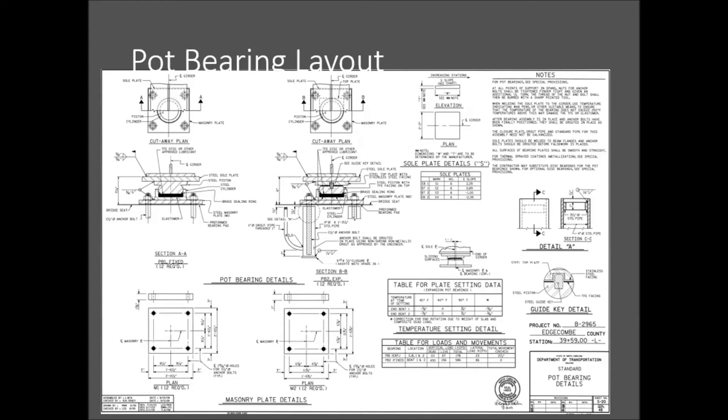The plans should include a bearing sheet similar to this. The sheet shown is for pot bearings, but the same process applies for disc and some other types of bearings. There are details for the fixed bearings and the expansion bearing on this sheet. There will be no adjustments for the fixed bearing since all movement should occur at the expansion end of the girder.